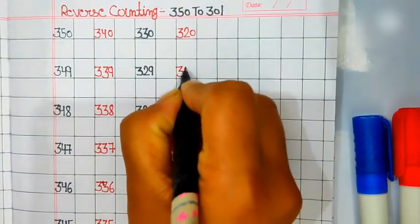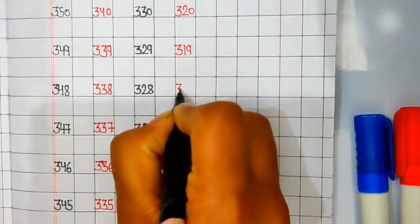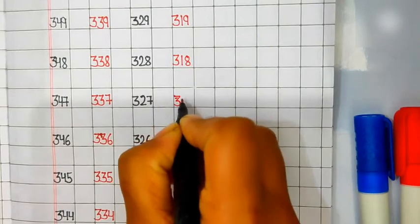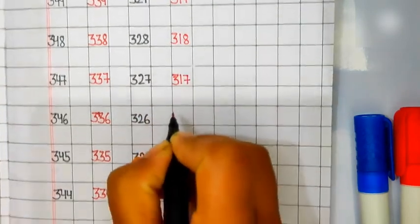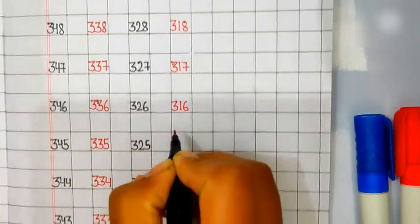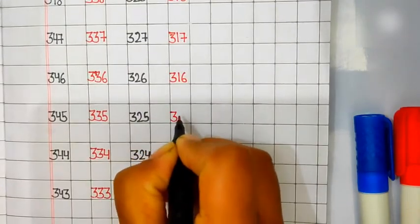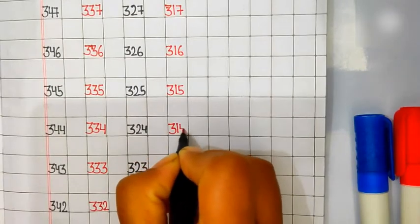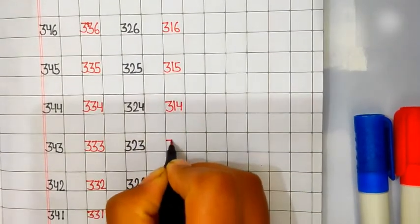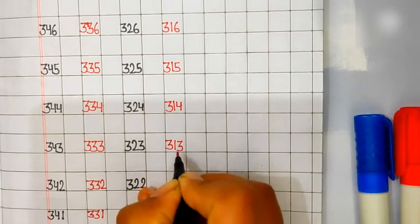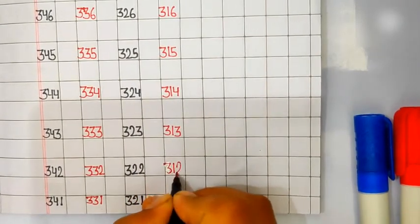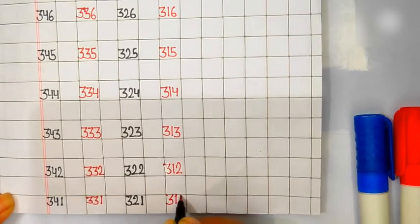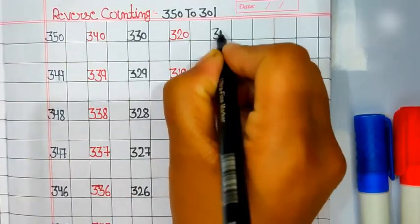319, 318, 317, 316, 315, 314, 313, 312, 311, 310.